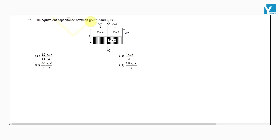The equivalent capacitance between points P and Q is what we have to determine for the given configuration.